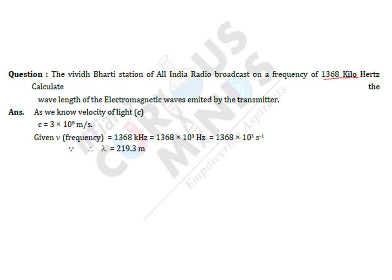This is a pretty easy question. We have a frequency, and we know that C is equal to frequency into wavelength. You should always know the value of C — the speed of the electromagnetic wave — which is 3×10⁸ m/s. So the value of wavelength will be nothing but C divided by frequency.